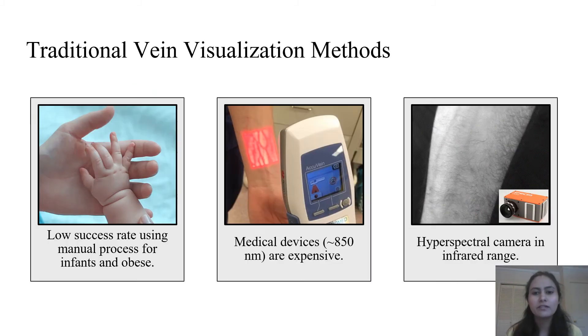The most common method used to locate veins by doctors and clinicians is manual, which results in low rates of successful needle insertion especially for obese patients and infants. Multiple medical devices work in the infrared range to produce vein localization maps. These devices are expensive and are not suitable for point of care applications. Similarly, hyperspectral cameras can easily show veins using information in the infrared range.